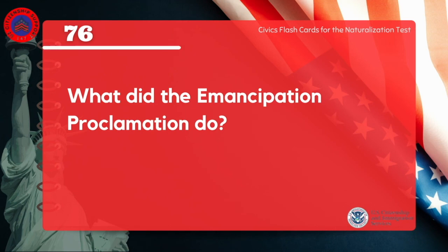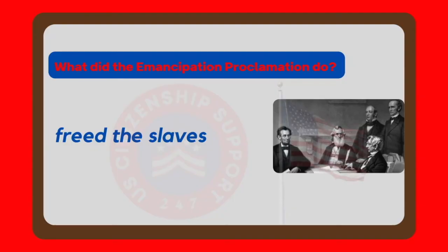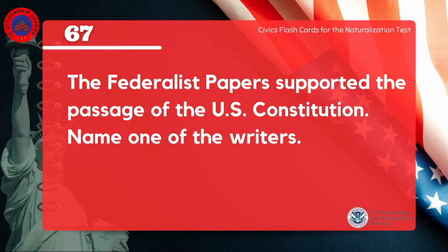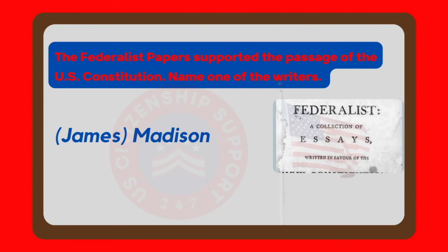What did the Emancipation Proclamation do? Freed the slaves. The Federalist Papers supported the passage of the U.S. Constitution. Name one of the writers. James Madison.